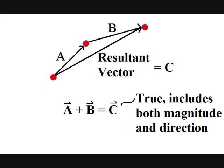That is, I am including both the magnitudes and directions of A and B in the summation. So it is true, the combined displacement of vector A and vector B gives the resultant vector displacement C.